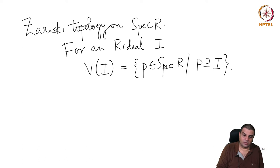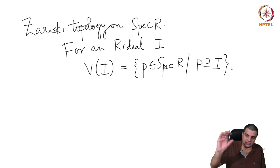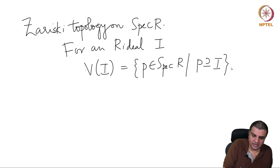We can get an induced subspace topology, or we can take V of I intersect max spec, and then talk about max spec, restricting ourselves to the earlier situation.